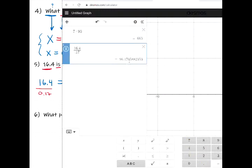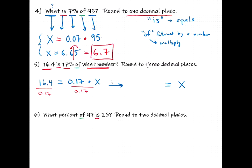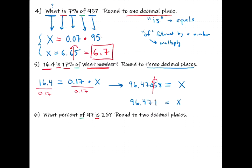16.4 divided by 0.17 gives 96.470588... We're rounding to three decimal places, so we have 96.4705. The first decimal place following the last one we're keeping is a 5, so we round the zero up to 1. Therefore x equals 96.471.